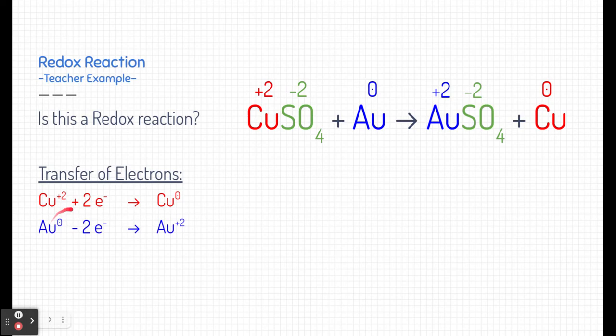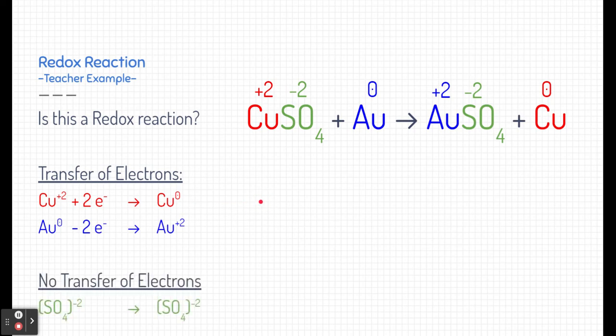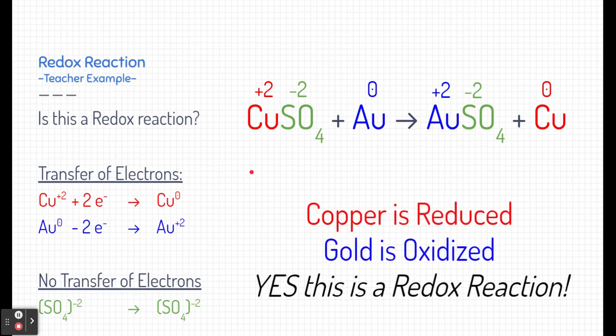Gold, on the other hand, started off with no charge, and it lost two electrons, and it became positively charged. Now, sulfate does not go through a transfer of electrons. Its charge doesn't change from the reactants to the product state, but there are a couple things that are going through a transfer of electrons. This is indeed a redox reaction, and in this case, copper is being reduced because it is gaining two electrons, and gold is being oxidized because it is losing two electrons.